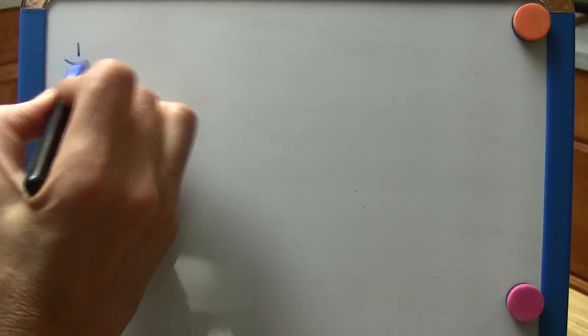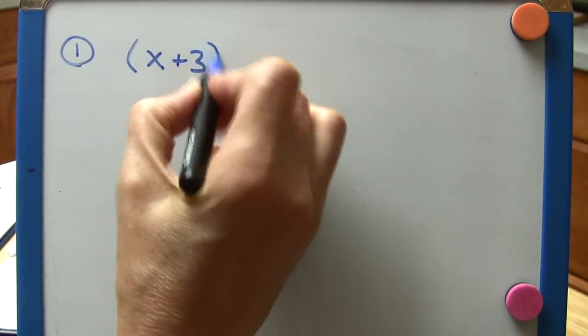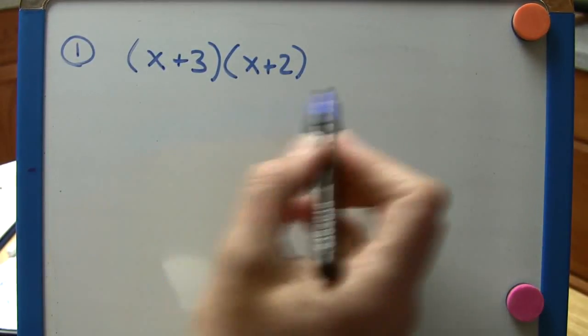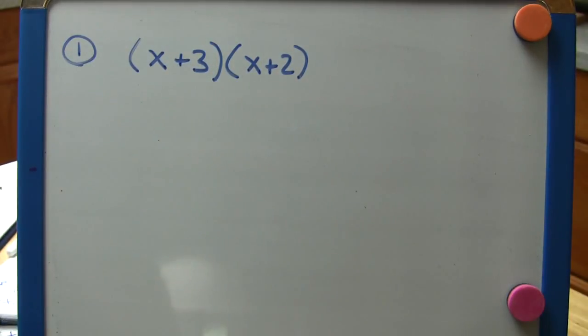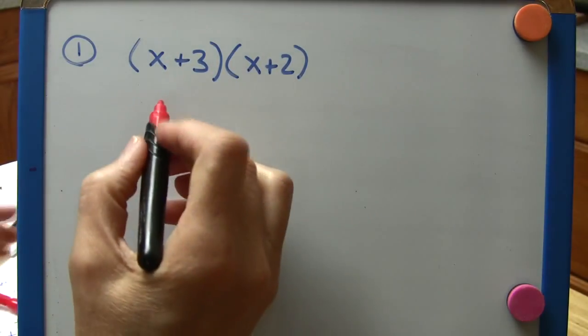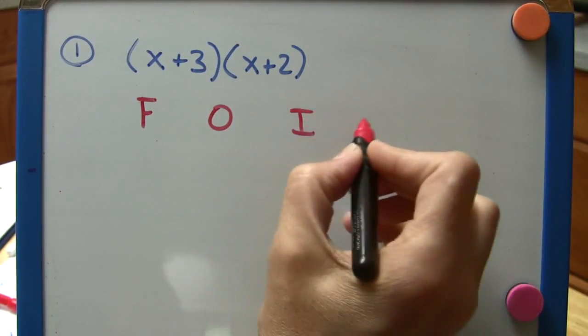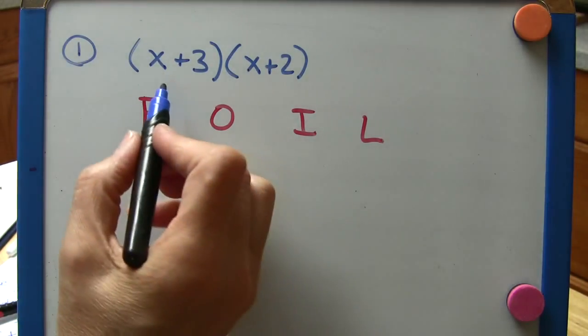So taking our first example here, we have x plus 3 times x plus 2. We can go ahead and just distribute and come up with an answer. Sometimes though, particularly for beginning students, it's helpful to remember FOIL so that you don't overlook any terms here.